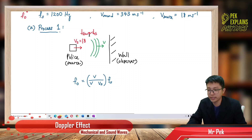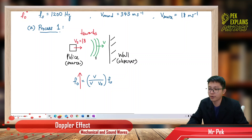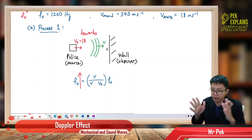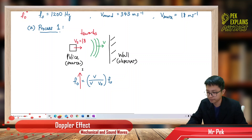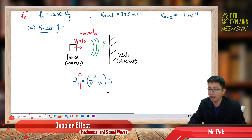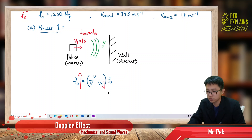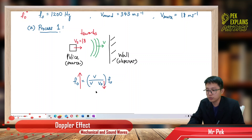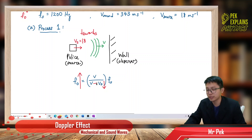Since the source is moving towards the observer, we expect the frequency to increase — it compresses the wave towards the wall. To make the frequency increase, the denominator must be smaller, so we use minus: v minus vs makes the denominator smaller, making the frequency bigger.